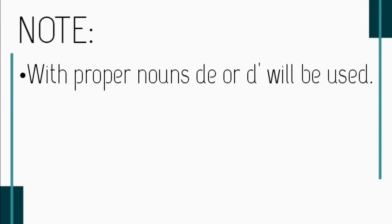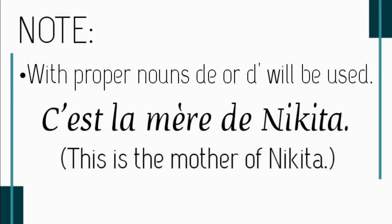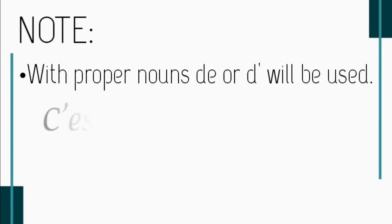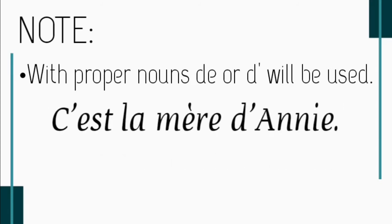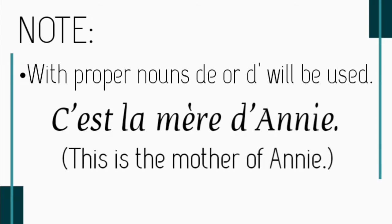Again, we have a note: with proper nouns, de or de l' will be used. De l' is used with names starting with a vowel. C'est la mère de Nikita — this is the mother of Nikita. Nikita is a proper noun so we use de, not de la. C'est la mère de Rahul — Rahul is a proper noun; even though it is masculine, we use de, not du. C'est la mère d'Ani — Ani is a feminine name starting with a vowel, so de becomes d'.